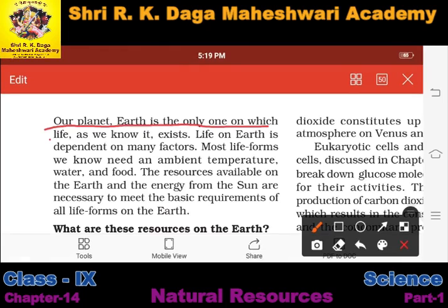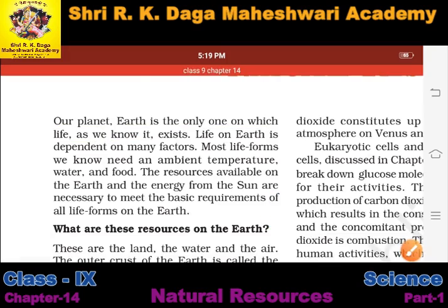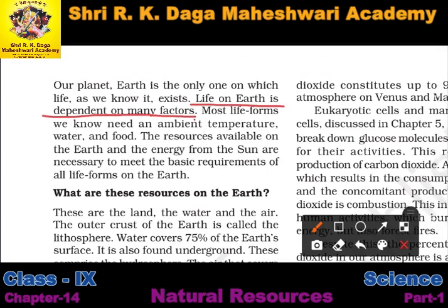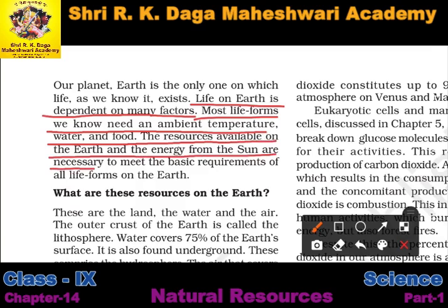Our planet Earth is the only one on which life as we know it is possible. Life on Earth is dependent on many factors. Most life forms need an ambient temperature, water, and food. The resources available on the Earth and the energy from the sun are necessary to meet the basic requirements of all life forms on the Earth.